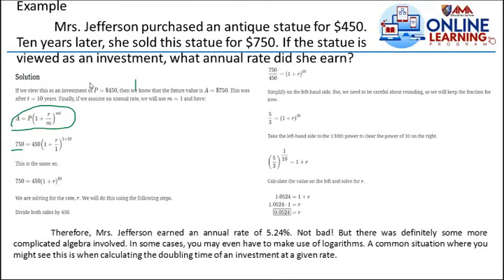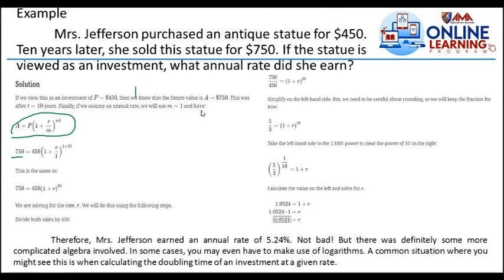If we view this as an investment, our principal equals $450. We know the future value equals $750. This was after t equals 10 years. Finally, if we assume an annual rate, we will use M equals 1 and have A equals P multiplied by 1 plus R all over M raised to n times t.